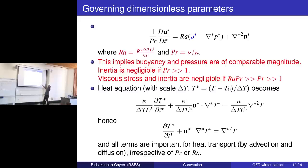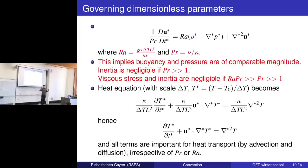The Rayleigh number essentially balances the pressure and buoyancy terms. At higher Rayleigh number, the pressure difference can immediately drive a flow, and this large number magnifies the density term in the equations.